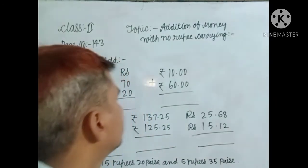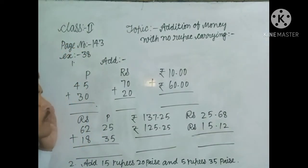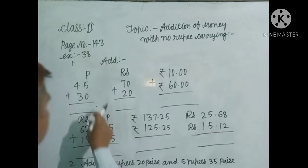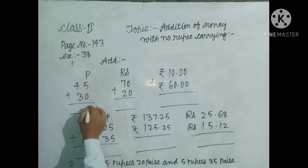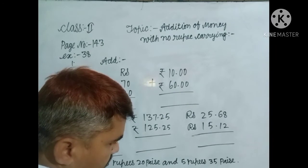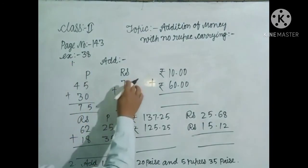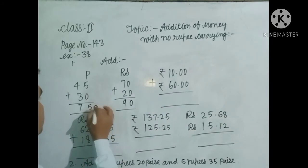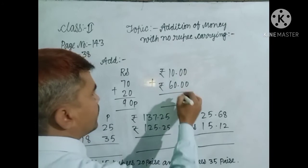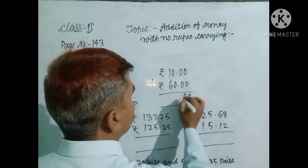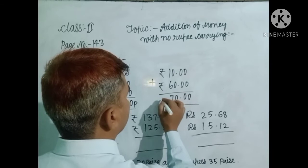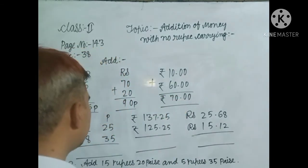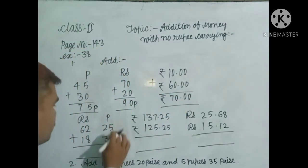Let us just start your topic. In front of you some problems without no rupee carries. So let us start from right sides. 5 plus 0, 5 and 4 plus 3, 7. That means 75 paise. 90 paise. And here it ends 0, 0, 0, 6, 1, 7. That means 70 rupees.